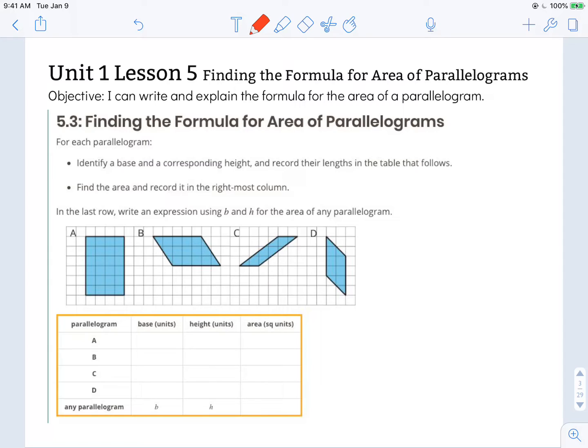For each parallelogram, identify a base and a corresponding height and record their lengths in the table that follows. Find the area and record it in the rightmost column. In the last row, write an expression using B and H for the area of any parallelogram.